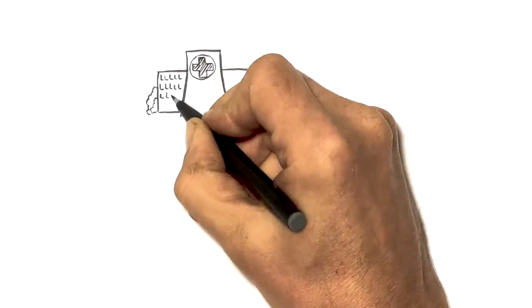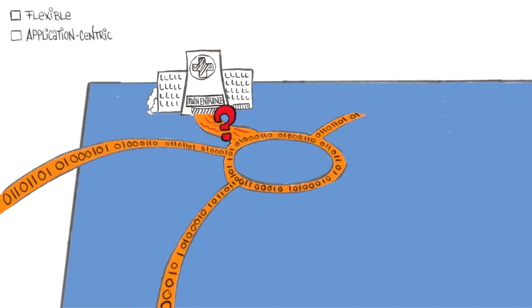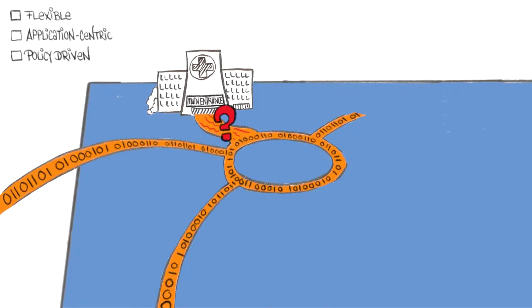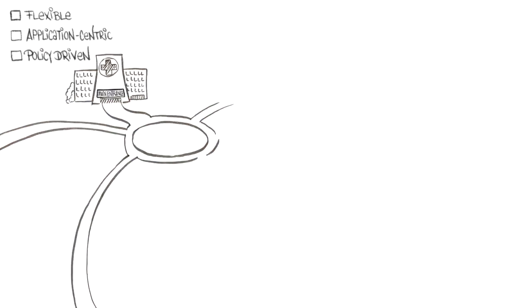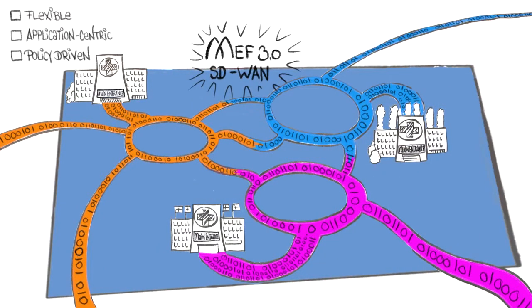What about mission-critical apps? These apps require flexible, application-centric, policy-driven network services that leverage smart underlay connectivity services like carrier Ethernet. This is the role of MEF 3.0 SD-WAN services.